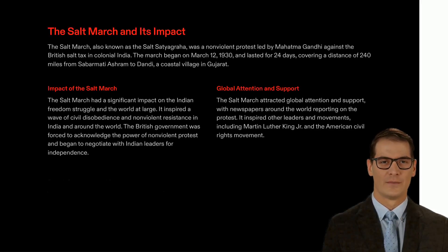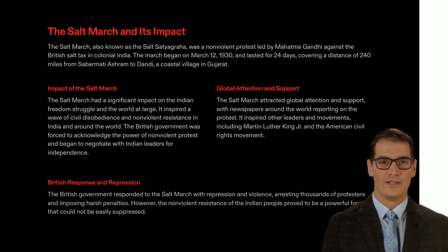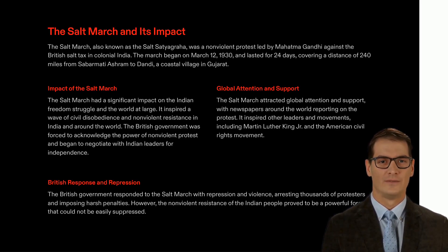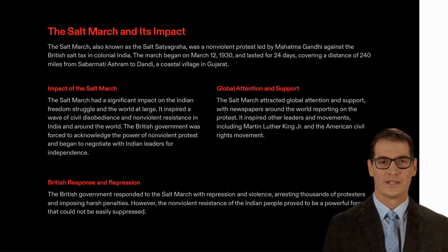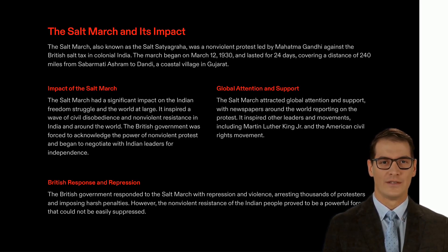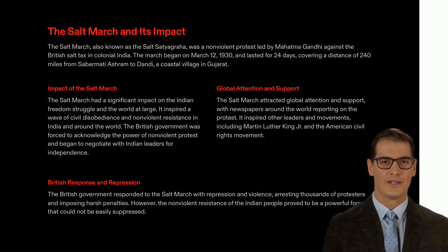In 1930, Mahatma Gandhi led the Salt March, also known as the Salt Satyagraha, to demonstrate the collective power of the people. Starting from Sabarmati Ashram, Gandhi marched 240 miles in 24 days to Dandi, a coastal village in Gujarat. This peaceful yet powerful form of protest spread across India and inspired similar movements worldwide. In response, the British government used violence and repression, arresting thousands of protesters and imposing harsh penalties. Despite this, the people's non-violent fight for justice pushed the British government to negotiate with Indian leaders for independence, leading to India's eventual freedom.